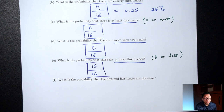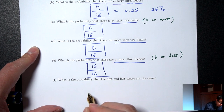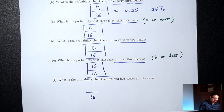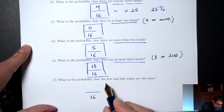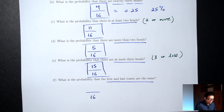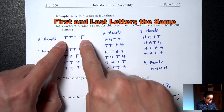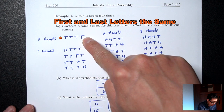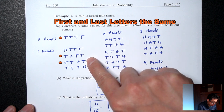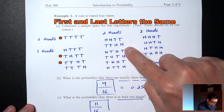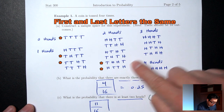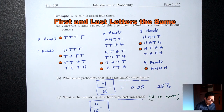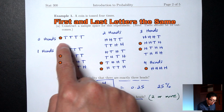Part F: What's the probability that the first and last tosses are the same? The bottom is still 16. We need outcomes where the first and last coin are both tails or both heads. Counting those gives us 8 outcomes. So P(first and last same) = 8/16.